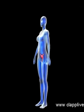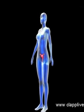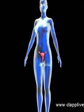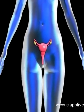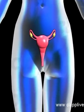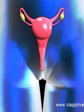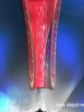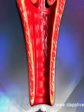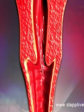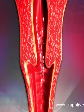Fertilization is an internal process in human beings. It takes place inside the body of the female. Semen, which contains the sperms, is introduced into the female genital tract by the penis during copulation. The deposition of sperms in the vagina is called insemination.